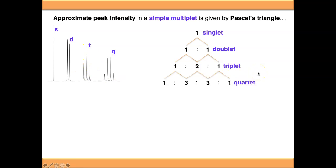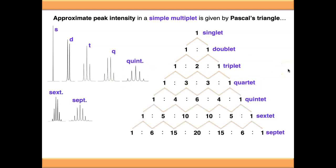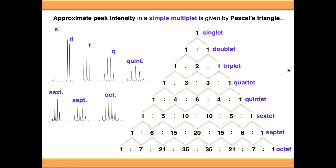Going again, we split the 2 in both directions. That adds with the flanking 1s to give us a 3 in the middle, so 1:3:3:1 is the signal intensity of a quartet. You can continue doing this down the range of simple multiplets, and it gives you an accurate signal intensity that's reflected in your NMR spectra.